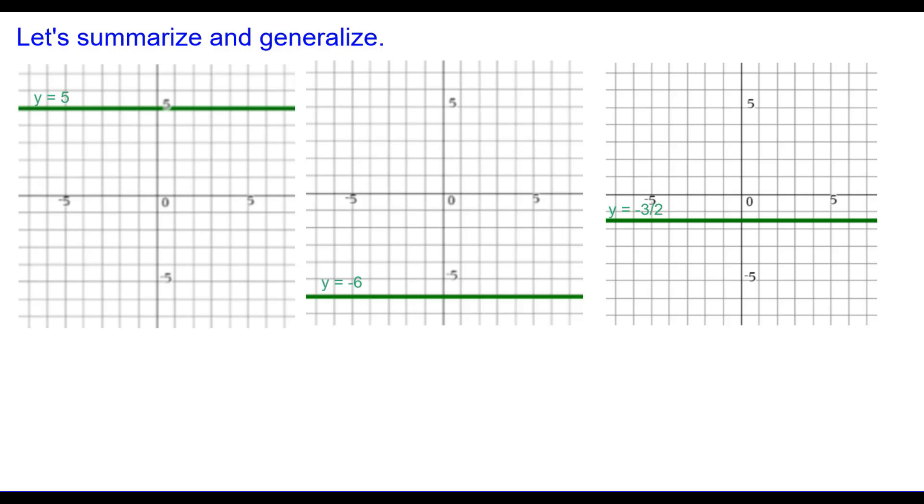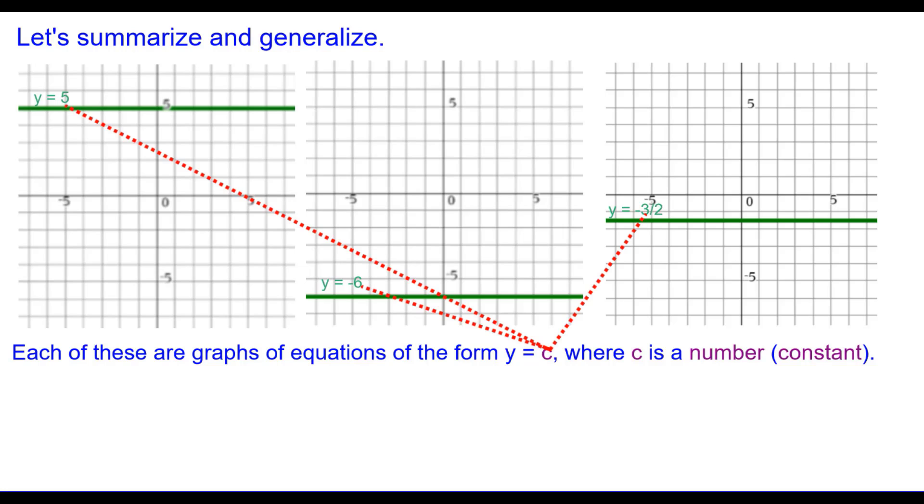So let's now summarize and generalize. Each of these graphs are graphs of equations of the form y equals c where c is some constant. Each of these lines is a horizontal line.